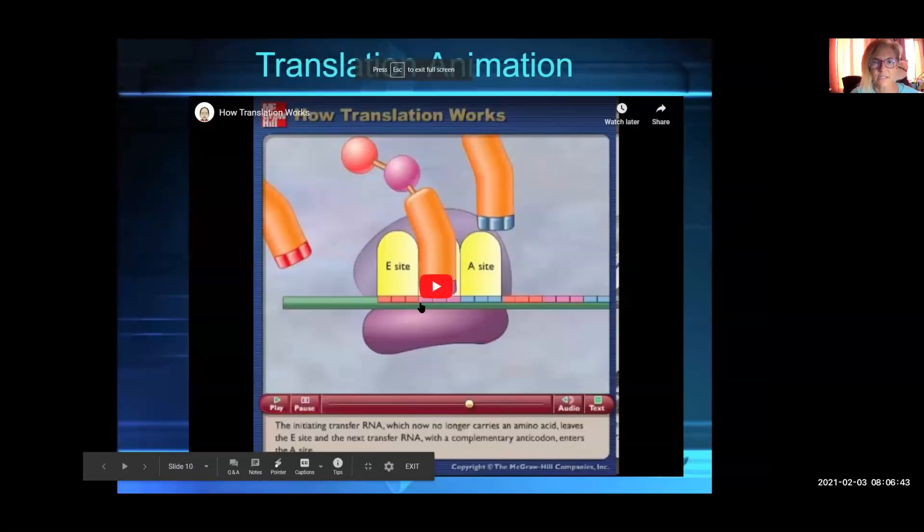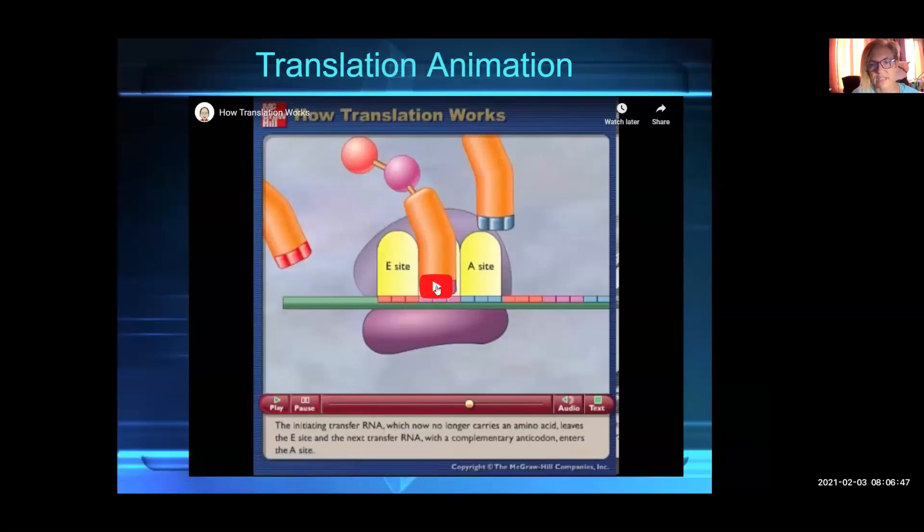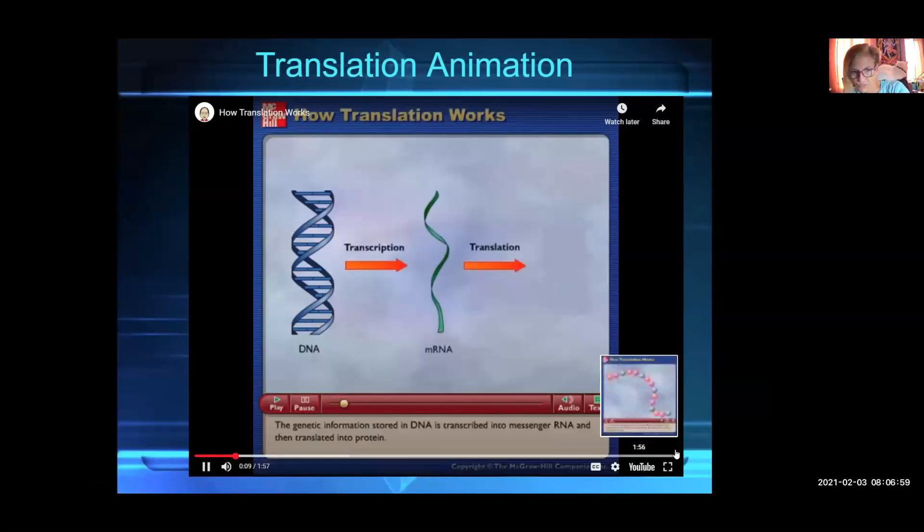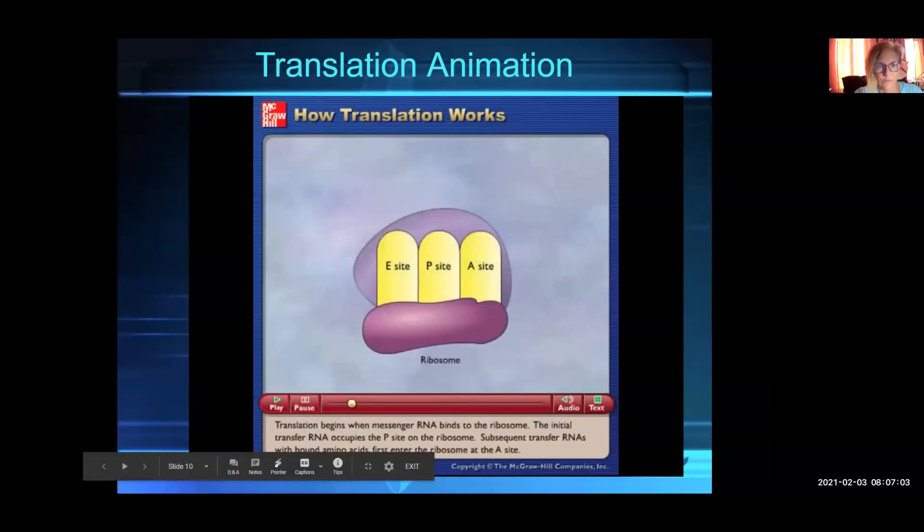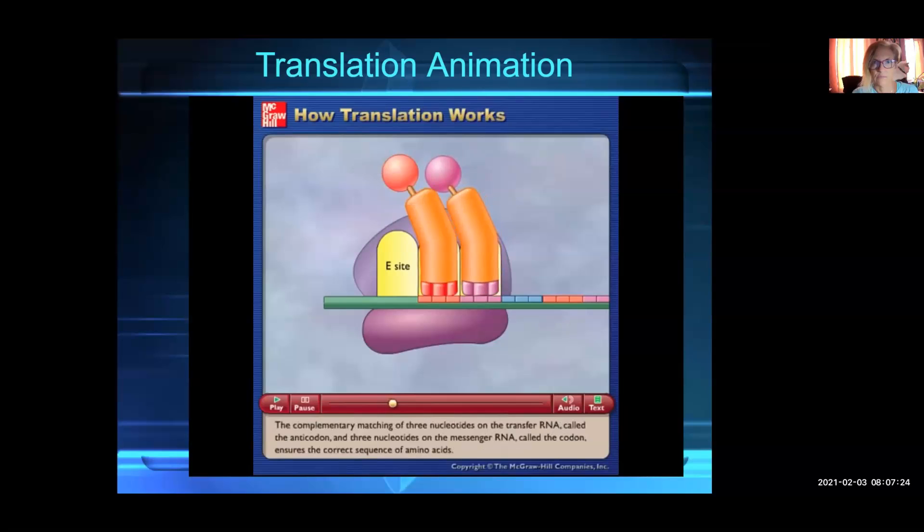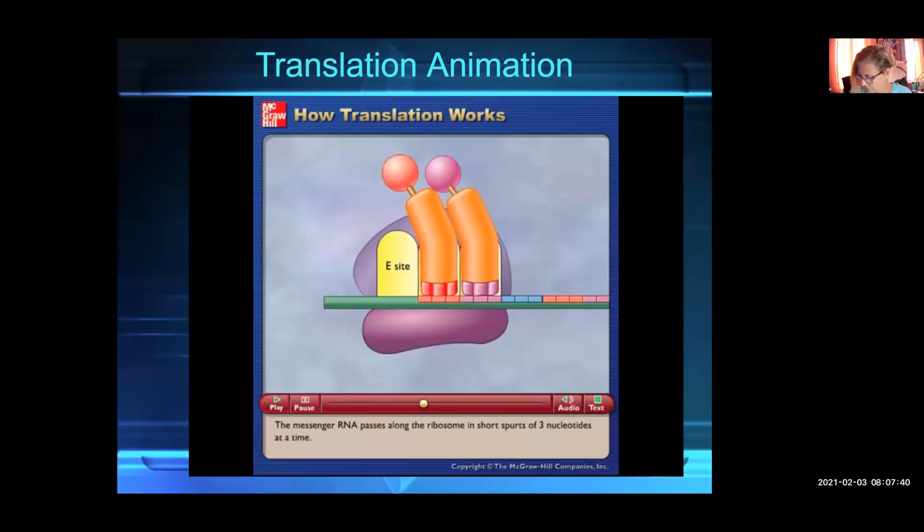Here's a video showing you—I like animations. It shows you what's actually happening. The genetic information stored in DNA is transcribed into messenger RNA and then translated into protein. Translation begins when messenger RNA binds to the ribosome. The initial transfer RNA occupies the P site on the ribosome. Subsequent transfer RNAs with bound amino acids first enter the ribosome at the A site.